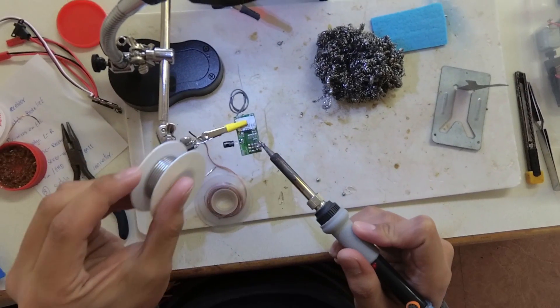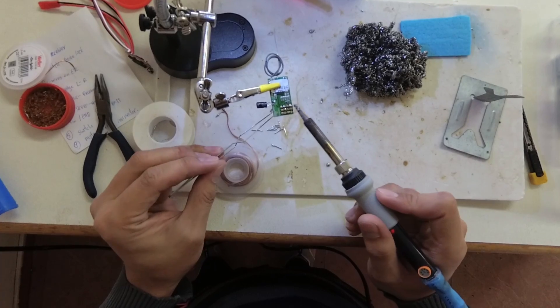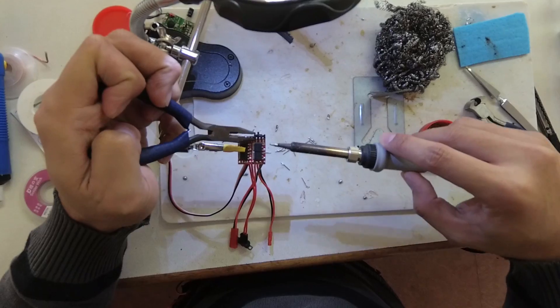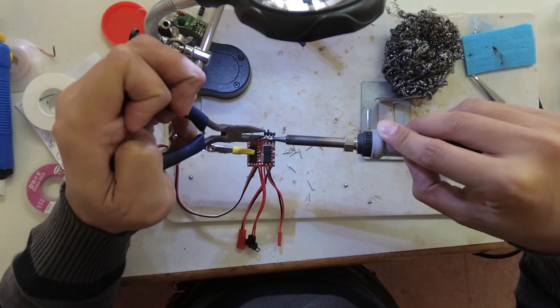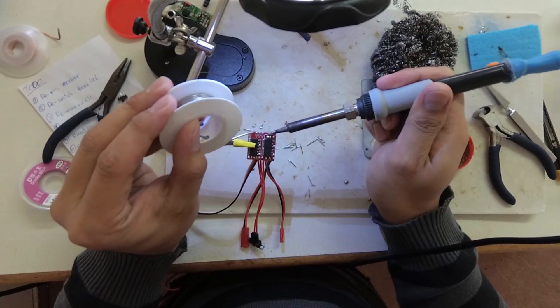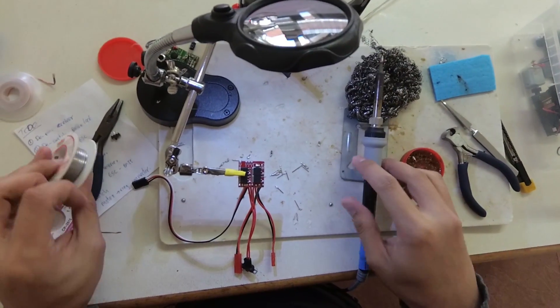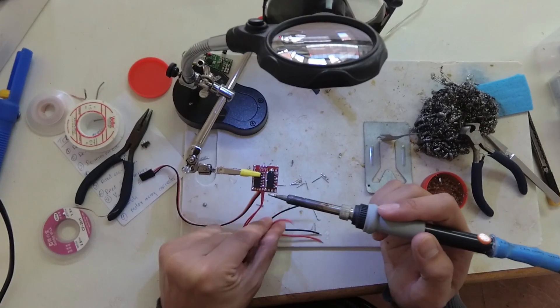Let's start by desoldering all the pins out of the receiver. On the ESC, first remove the brake switch and bridge the inner two spots to turn the brake on permanently. Then remove all the wires because I want to put them on the other side.